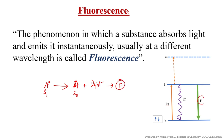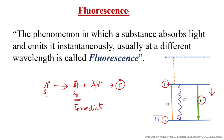Here you can observe that a molecule present in the S1 state returns to the S0 state by releasing light. In the Jablonski diagram, a straight arrow indicates the release of light. The main definition of fluorescence is that the substance absorbs light and emits the light immediately. If the substance absorbs some light and releases the light immediately, then that process is called fluorescence.